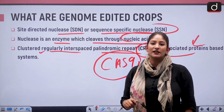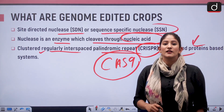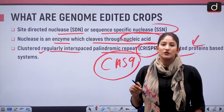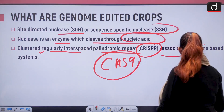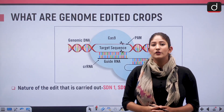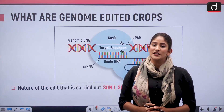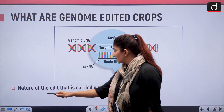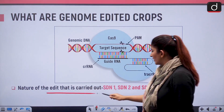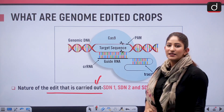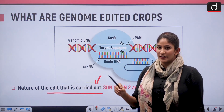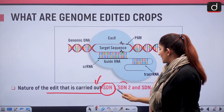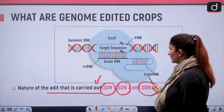This particular editing tool has made scientists grow leaps and bounds in genetic engineering. The nature of the edit carried out is divided into three categories: SDN1, SDN2, and SDN3.